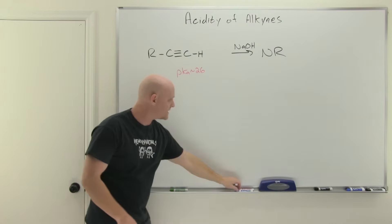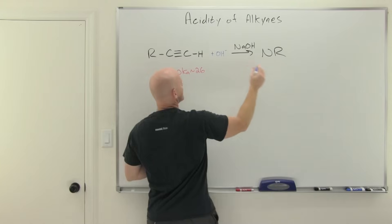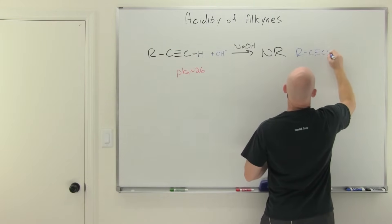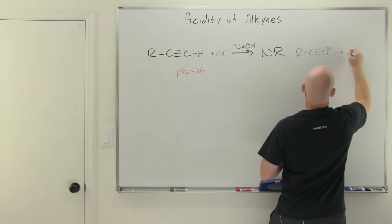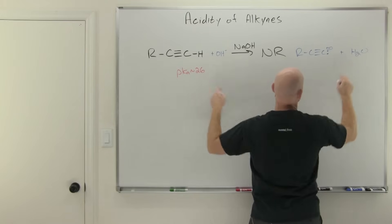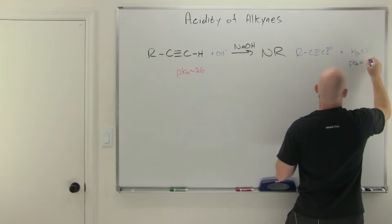And we can kind of see why here. If we kind of show this reaction here, plus hydroxide. And if you actually did form products here you'd form the deprotonated alkyne which we'll give a special name here in a little bit. And you'd form water. And so our acid on this side's got a pKa of 26 but water has got a pKa of like 15.4.